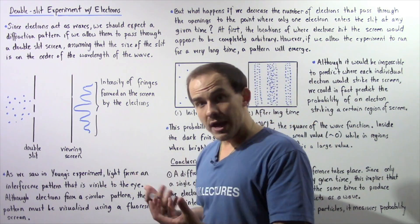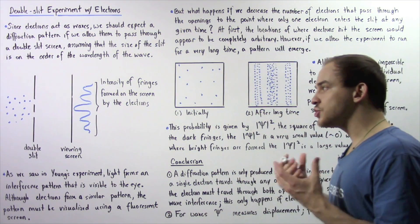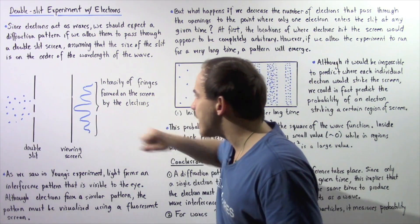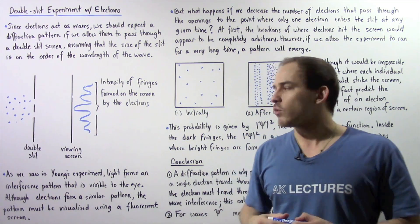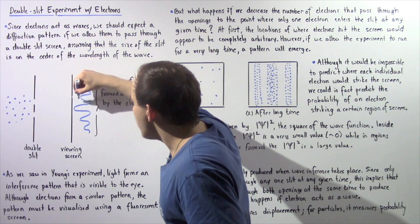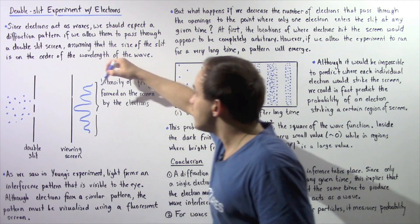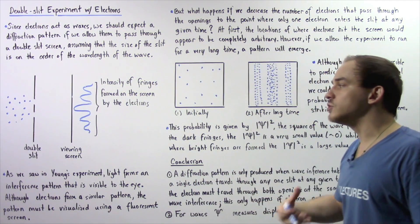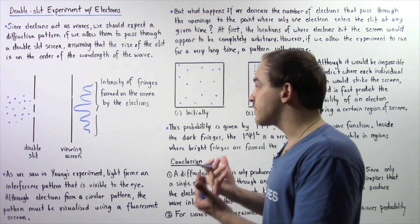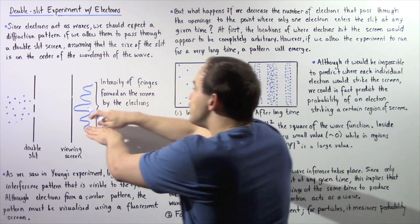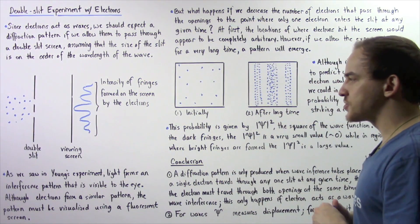Constructive interference of the waves leads to bright fringes, and destructive interference leads to dark fringes. This graph represents the intensity of the fringes formed on the screen by our electrons. The crests represent regions of bright fringes and the troughs represent regions of dark fringes. The brightest fringe is formed at the center, and the intensity decreases as we move farther away from the center of the viewing screen.